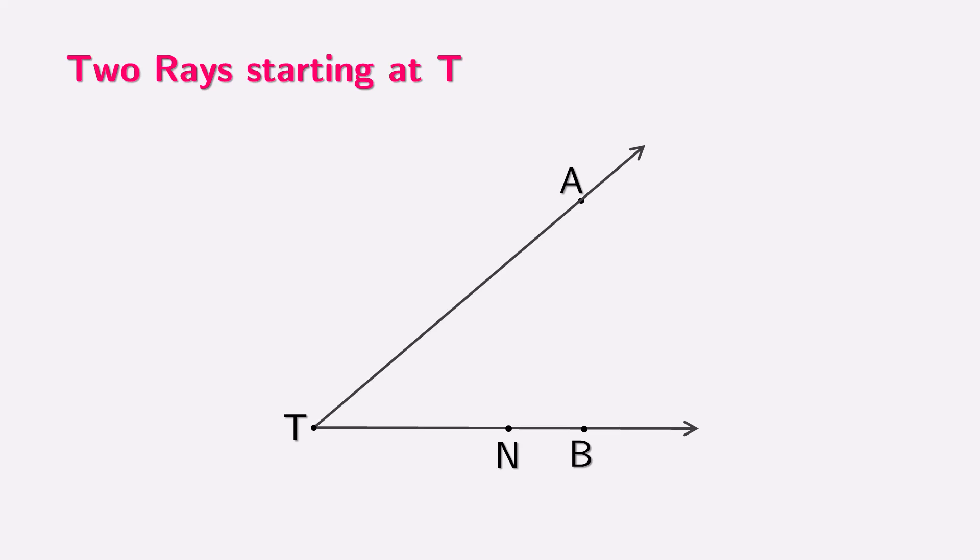Let's take a look at the figure on the screen. From point T, two rays begin: ray TA and ray TB. Notice that point N lies between T and B on ray TB. Now, can you tell if T is the starting point of both rays? Yes, it is. Both ray TA and ray TB begin at T and extend in different directions. However, for the ray NB, T is not the starting point.